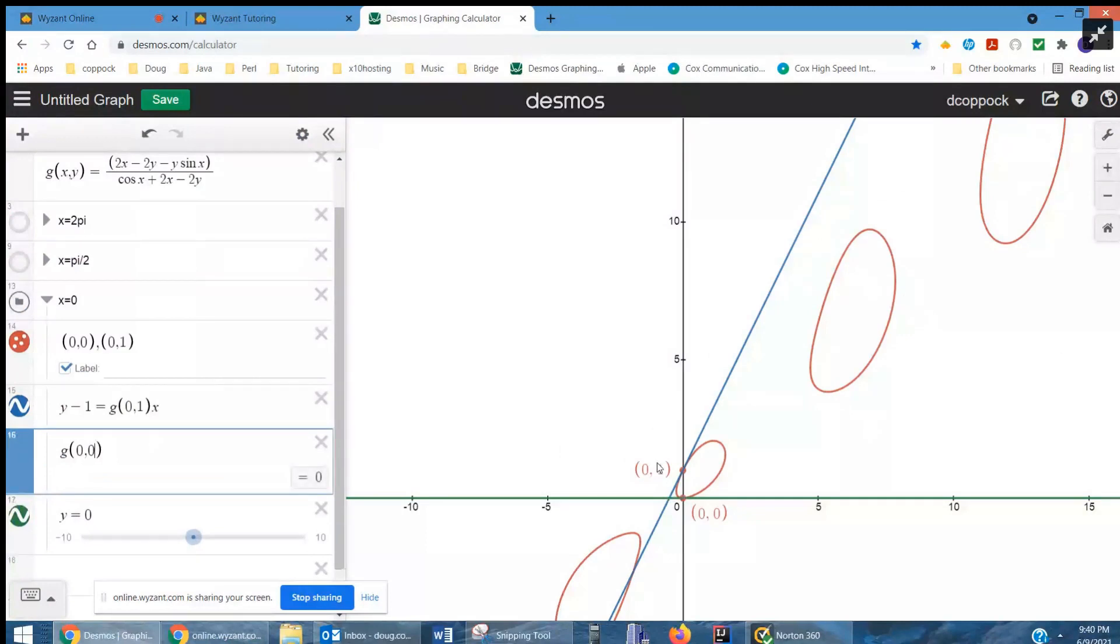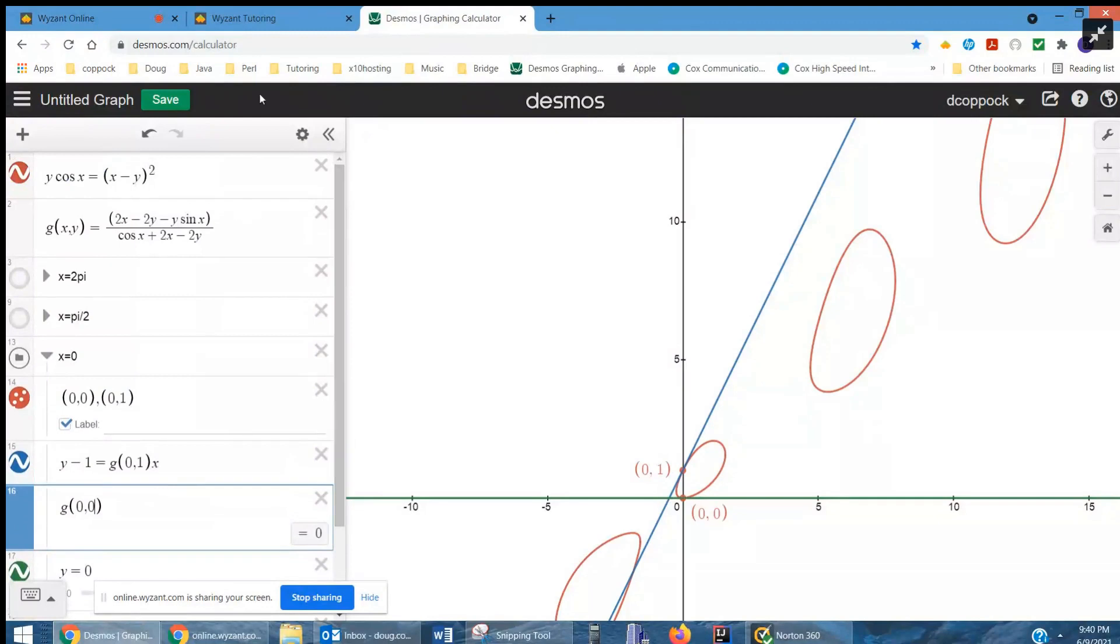A slope of 2. Okay. So that's the equation of the slope of the blue line there. So indeed, that looks like the correct answer.